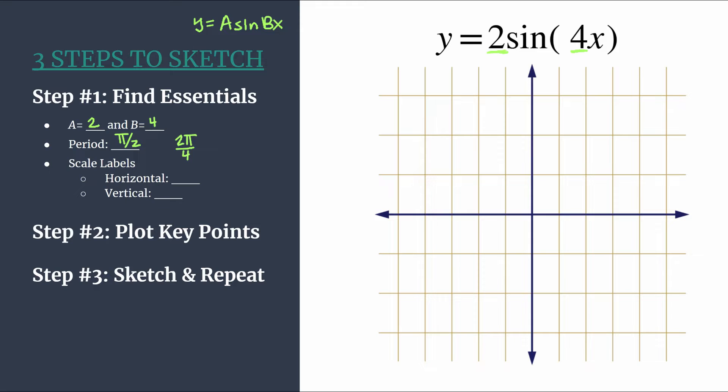Remember, period is just the horizontal length of a cycle. So for a complete cycle, it'll take π over 2. Now that we've done that analysis, we can choose scale labels. Remember that you can choose basically any label that you want, but with the three steps to sketch method, we do it in a very particular way, especially for our horizontal labels. To find our horizontal labels, we just need to take the period and divide by 4. In this case, we have π over 2 divided by 4, or if it's easier for you to write times 1 fourth, that's the same thing. So we should be labeling our horizontal scale tick marks counting by π over 8.